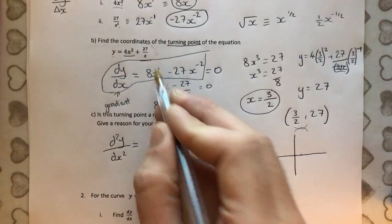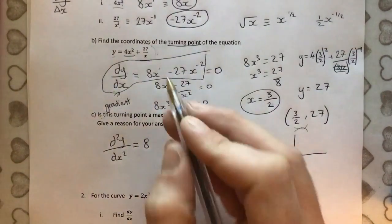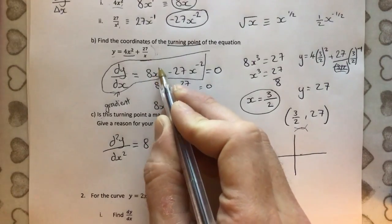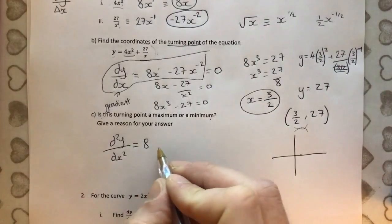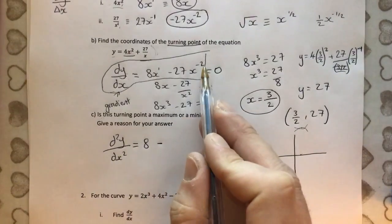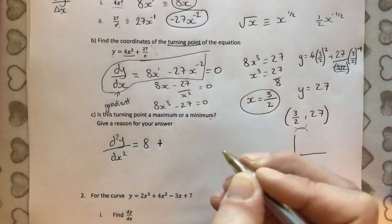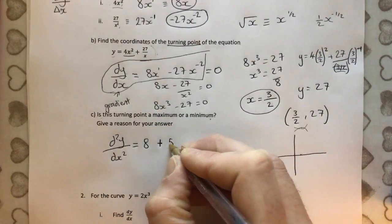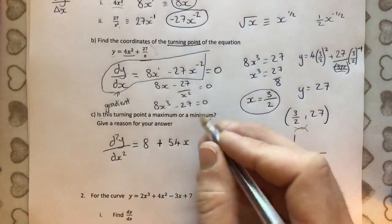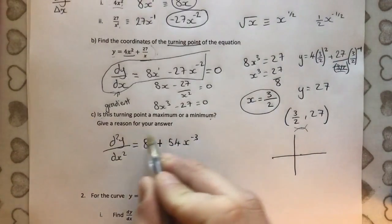Well, x to the 1 times the front by 1. So 8 times 1 is just 8. And the reduce of the power goes to 0. 1 take 1 is 0. And x to the 0 must be 1. So it's just going to be 8. So that x disappears. Minus. Now this is going to be slightly trickier. Minus 2 times minus 27. Well, actually, that's going to be plus. It's going to be plus 54x. And again, that reduces, so it's to the minus 3. So here's our second order differential.